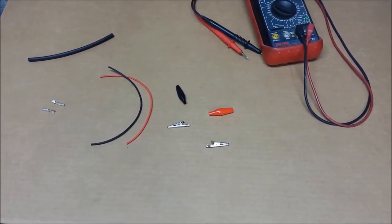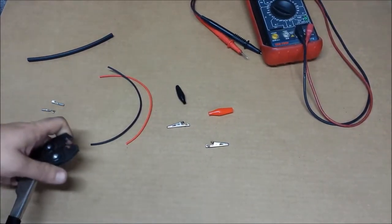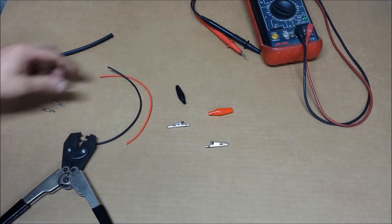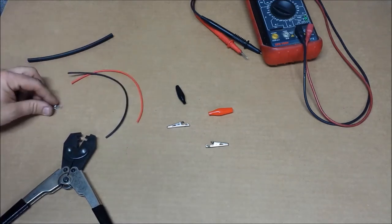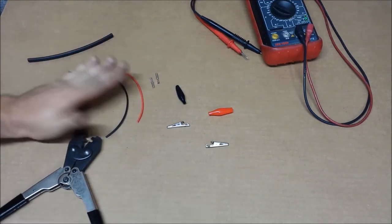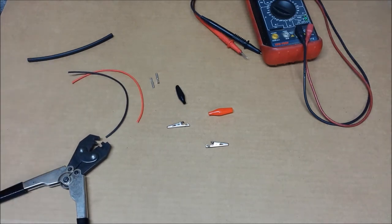So these are some alligator clips that I got off eBay. You can get them in like a 20 pack for a couple bucks. I've got a 16 gauge red and black wire. This is a GXL type automotive wire. It'll handle the heat of a soldering iron, so that's handy.